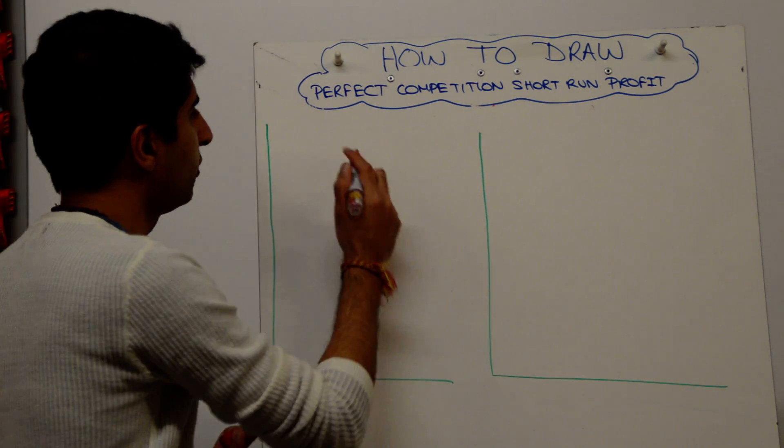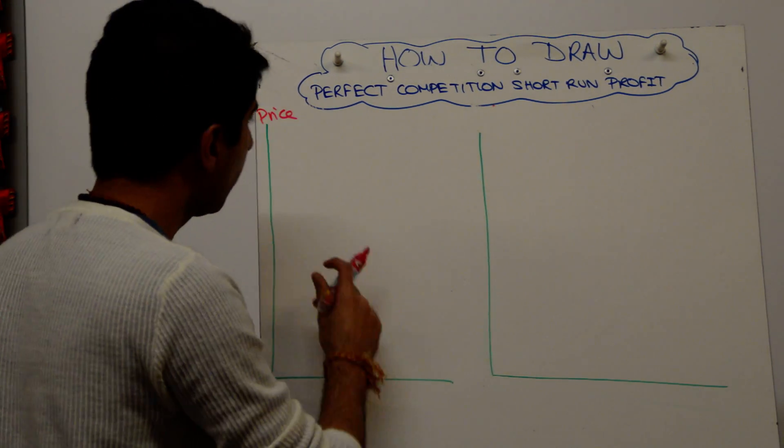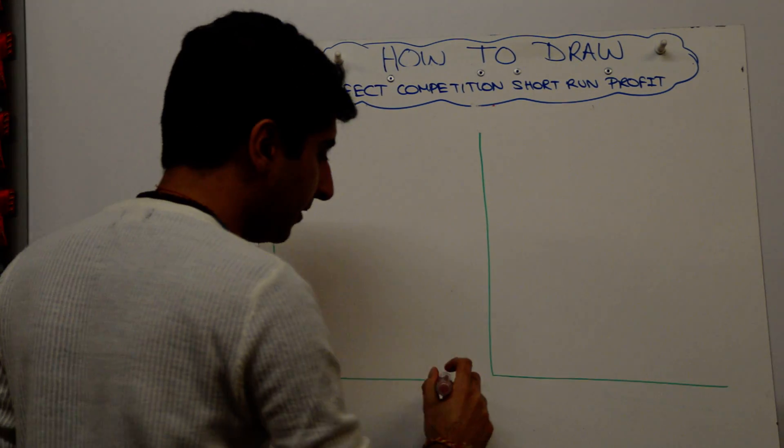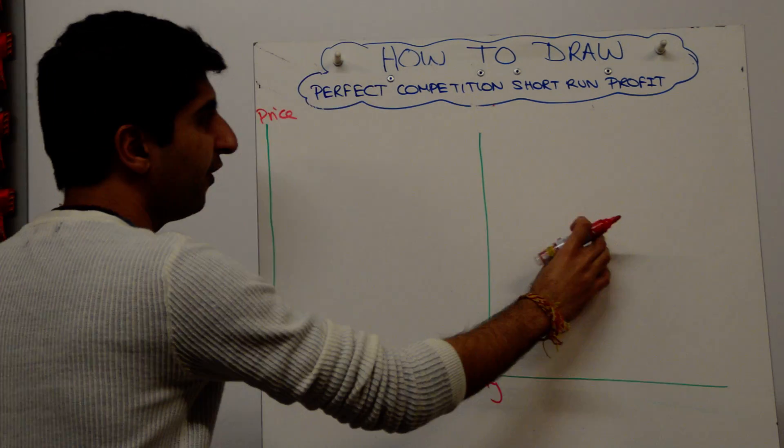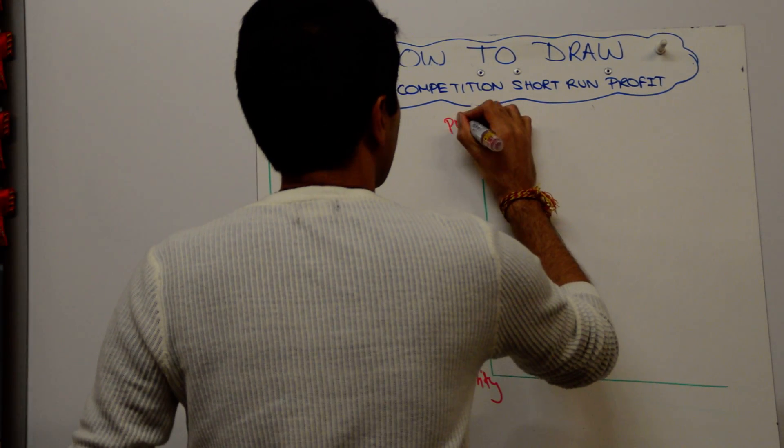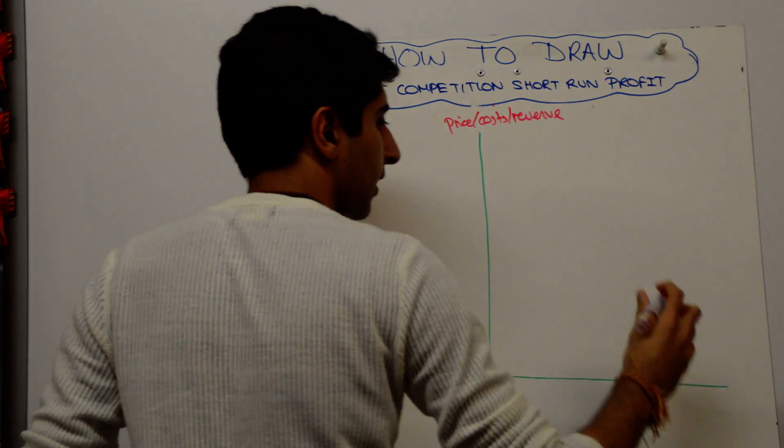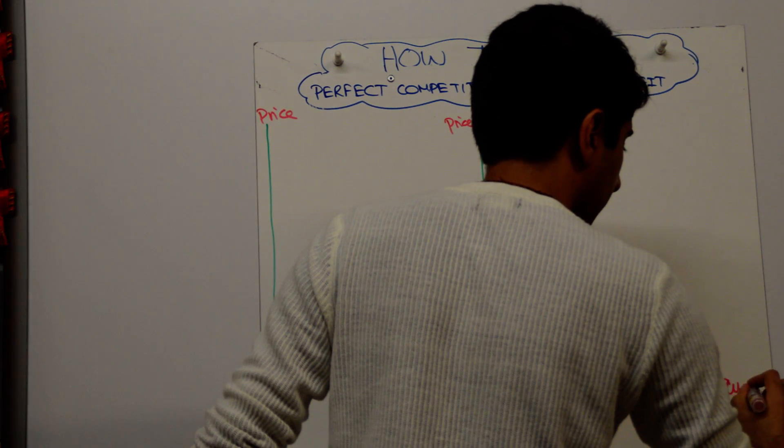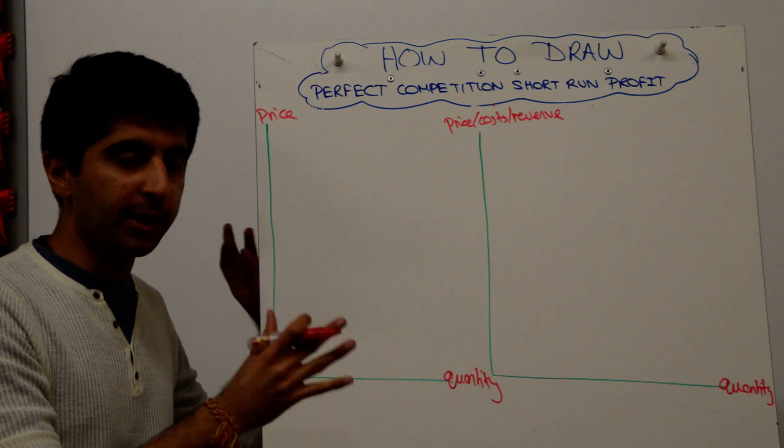Market and firm - you should remember that from the theory. If not, watch my previous video on perfect competition. So in the market we have price and quantity. No issues there. And in the firm we have price, costs and revenue. You must label all three. And quantity again on the x-axis. So always start by labeling your axes.